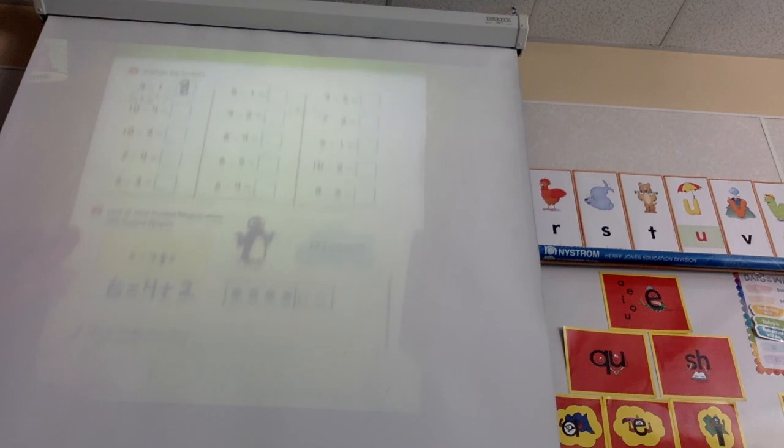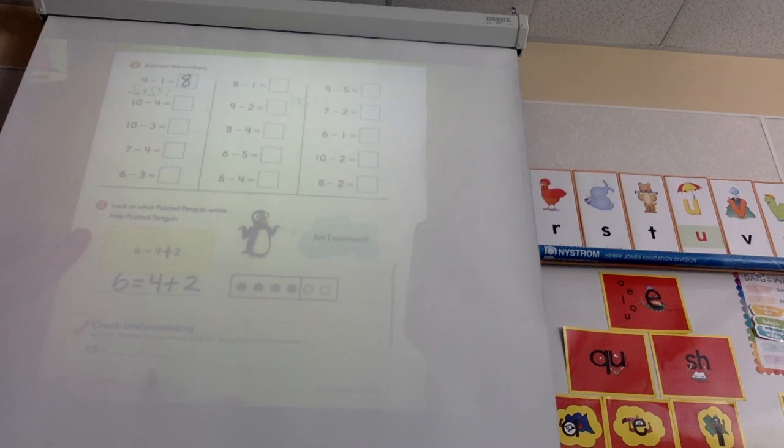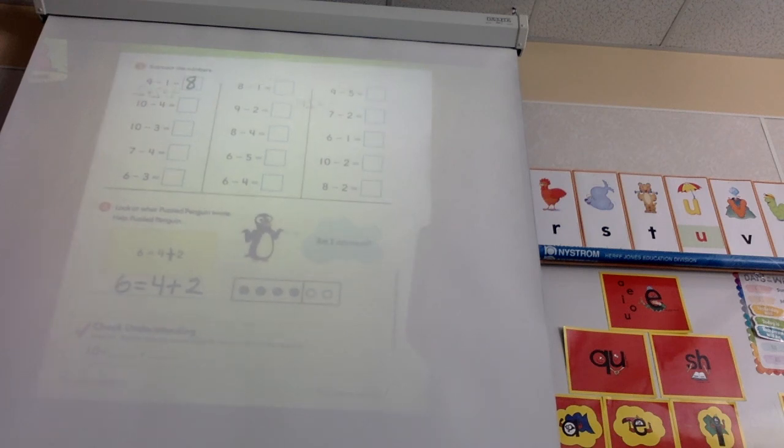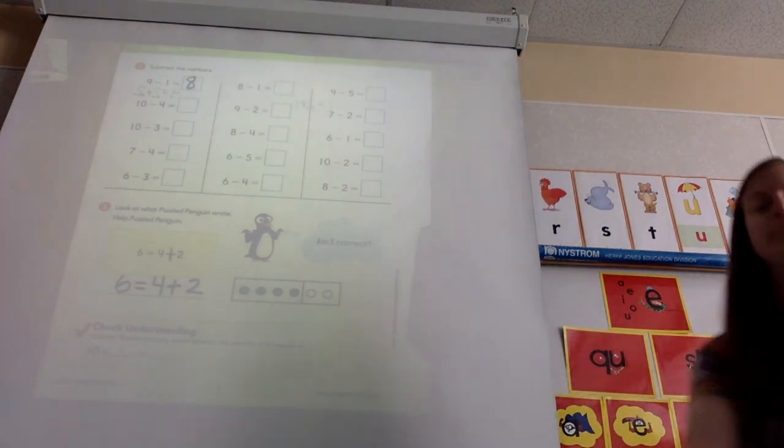Now, if you want to challenge down here, it says, can you come up with two partner numbers of 10? So you're going to write on the line two numbers that will equal 10. If you want to take a picture and have your parents send it to me, that's great. Otherwise, I will look forward to seeing it when we come back.